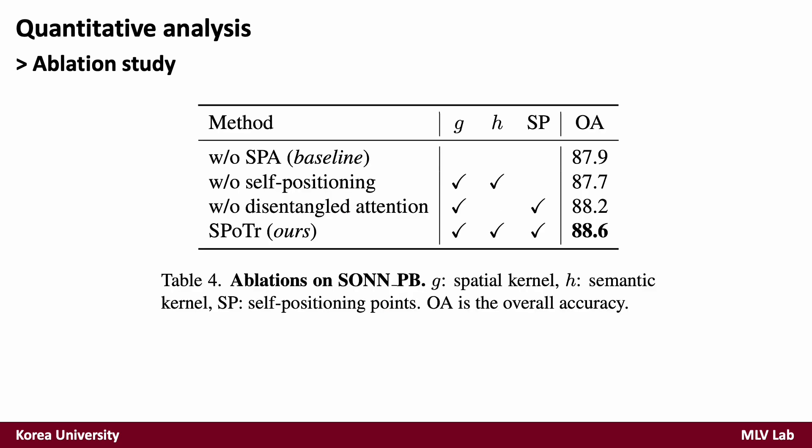To explore the contribution of each component of SPFormer, we conduct a series of ablation studies. The table shows results where the baseline without SPA learns only with local point attention. In the case of without self-positioning, we use farthest point sampling to randomly select a small set of points for cross-attention. For without disentangled attention, we only apply the spatial kernel function g. Our model with all components of SPA achieves the best performance in overall accuracy, verifying that every component is essential.